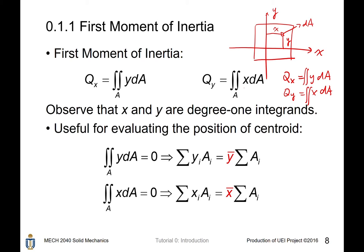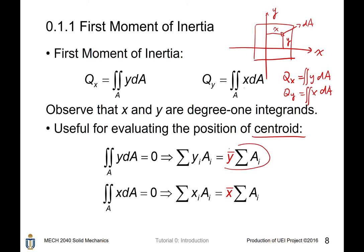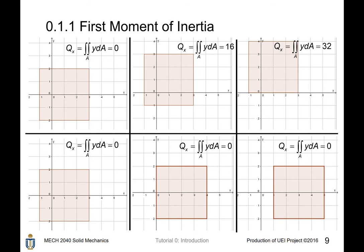The first moment of inertia concept is useful for finding the centroid of a cross-section, which will be introduced in later chapters. Basically, if you want to evaluate the centroid, you solve this equation and find the average position of all area elements.